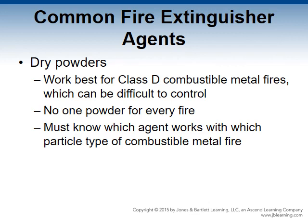Dry powders are the best method for extinguishing Class D combustible metal fires, which can often be difficult to control. No one dry powder works on every fire. Some sodium-based agents form a crust on the burning material to deplete oxygen. Graphite-based agents conduct heat away from the fuel. It is important to know which agent works for which type of combustible metal fire. Some are not used in an extinguisher and are applied by a scoop, shovel, or handle.